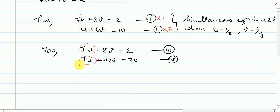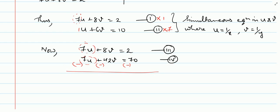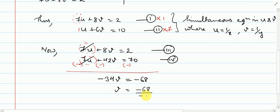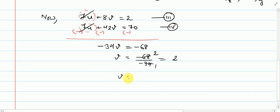Since the u terms are the same, subtract to eliminate them. Subtracting gives: 8v minus 42v equals 2 minus 70, so minus 34v equals minus 68. Therefore v equals minus 68 divided by minus 34, which gives v equals 2.